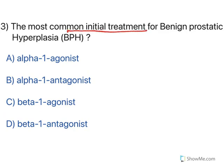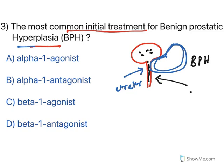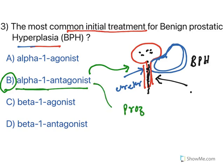The most common initial treatment for benign prostatic hyperplasia: the prostate gland undergoes hyperplasia, tissue size increases, pressing on the ureters, making urination a problem. To treat this, alpha-1 antagonists are used. Alpha-1 antagonists cause smooth muscle relaxation of the ureter, increasing its diameter so urination becomes normalized. Drugs like prazosin, terazosin, alfuzosin, doxazosin, and tamsulosin are all used to treat benign prostatic hyperplasia.